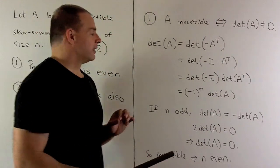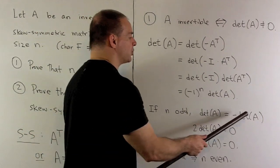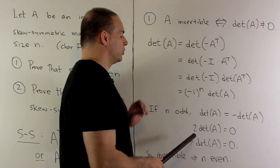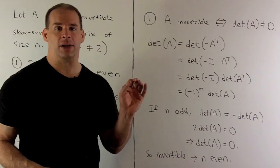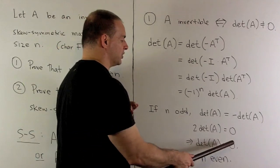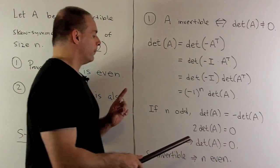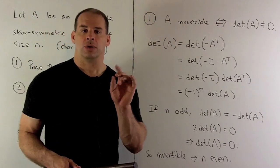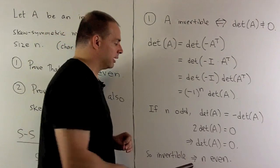If N is odd, that says determinant of A equals minus determinant of A. Pushing it to the other side, we have two times determinant of A equals zero. Since the characteristic is not equal to two, that means the determinant of A equals zero. So if A was invertible, there's no way N could be odd — so N had to be even.